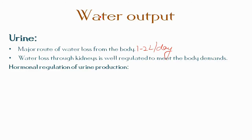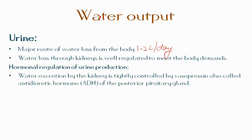About 180 liters of water is filtered by the glomeruli in the renal tubules every day; however, most of this is reabsorbed and only one to two liters is excreted as urine. Water excretion by the kidney is tightly controlled by vasopressin, also called anti-diuretic hormone (ADH), which is released by the posterior pituitary gland. The secretion of ADH is regulated by the osmotic pressure of blood plasma.